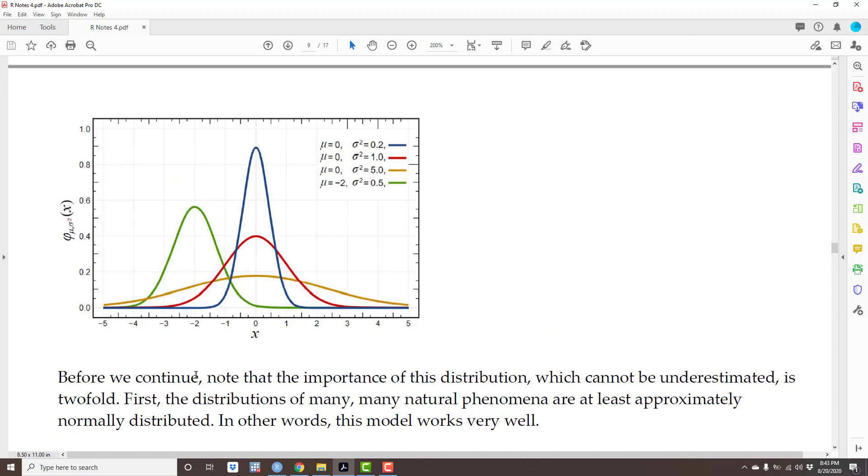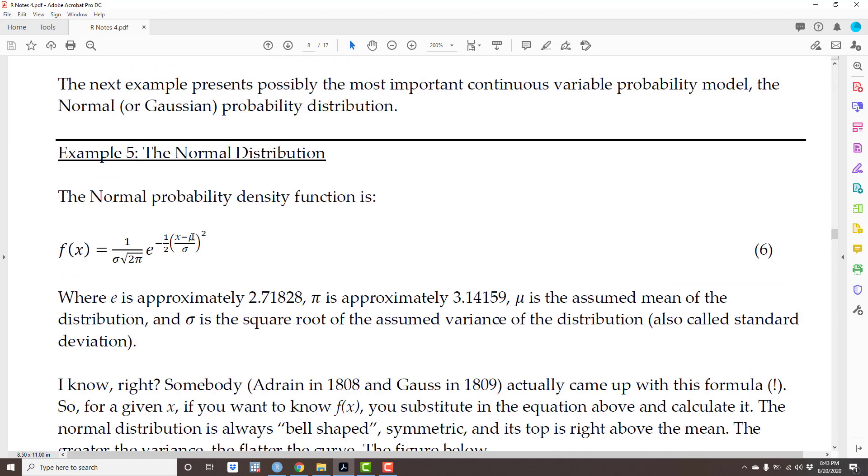Now going back to the formula, how come the mean and the variance, or actually the standard deviation which is the square root of the variance, how come they are in the formula? Well, because here's the thing: when they came up with this equation, they figured out that whatever number they put in here is gonna be the expected value of the distribution, and whatever number they put here and here is gonna be the standard deviation of the distribution. I included some coding in R to test that, so let's look at it.